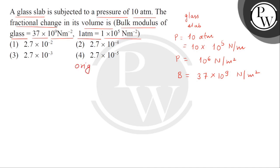So for this, let's assume the original volume of the glass slab is V. Now after applying pressure, the volume decreases. So we'll consider the change in volume. Change in volume means final volume minus initial volume, which is del V. So we need to find the fractional change in the volume, that is del V divided by V.